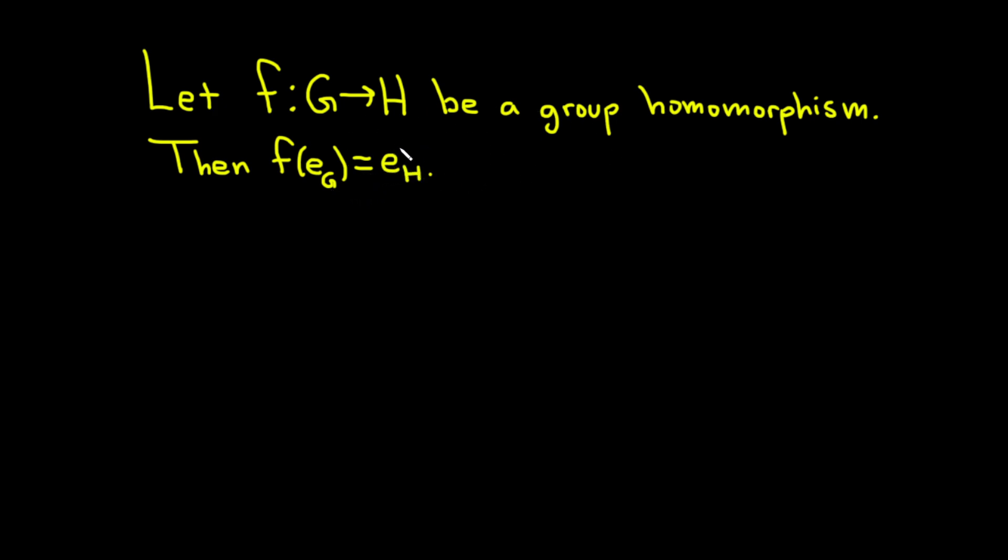Let me briefly explain this. By a group homomorphism we mean a map that has the property that f(xy) = f(x)f(y), and this has to be true for all x,y in our group G.